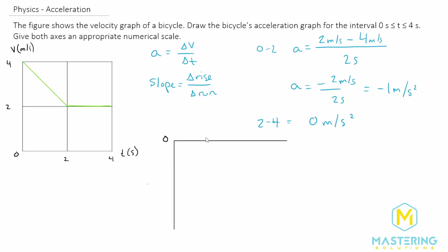Here is our acceleration versus time graph. On the x-axis we have time with marks at 2 seconds and 4 seconds, and on the y-axis we have acceleration in meters per second squared with a mark at negative 1. From time 0 to 2 seconds the acceleration is negative 1 meters per second squared, and then at 2 seconds it drops down to 0 meters per second squared through to 4 seconds.